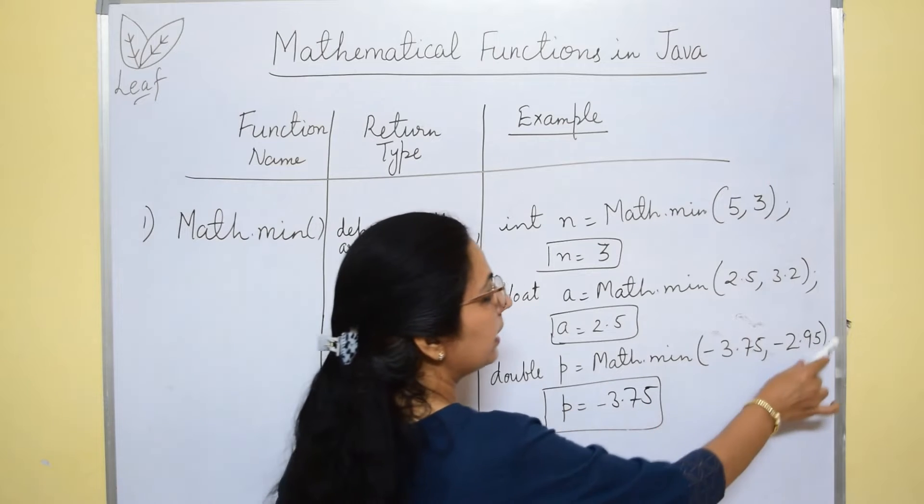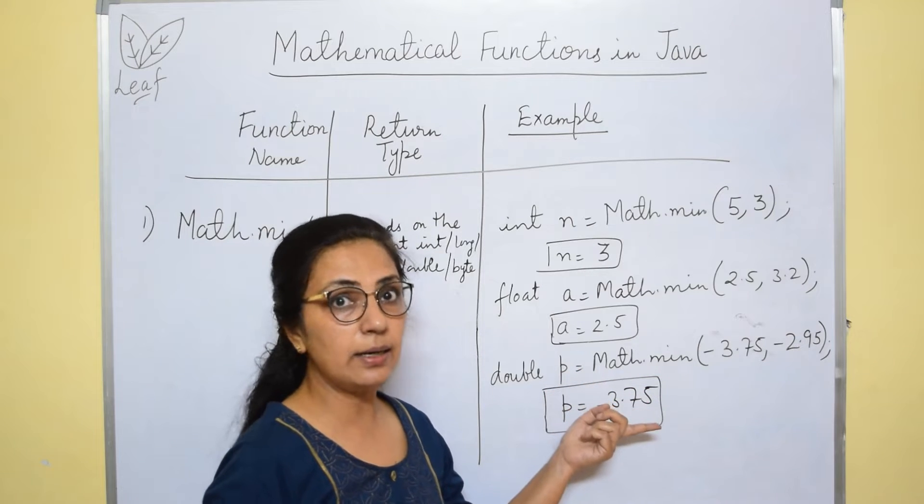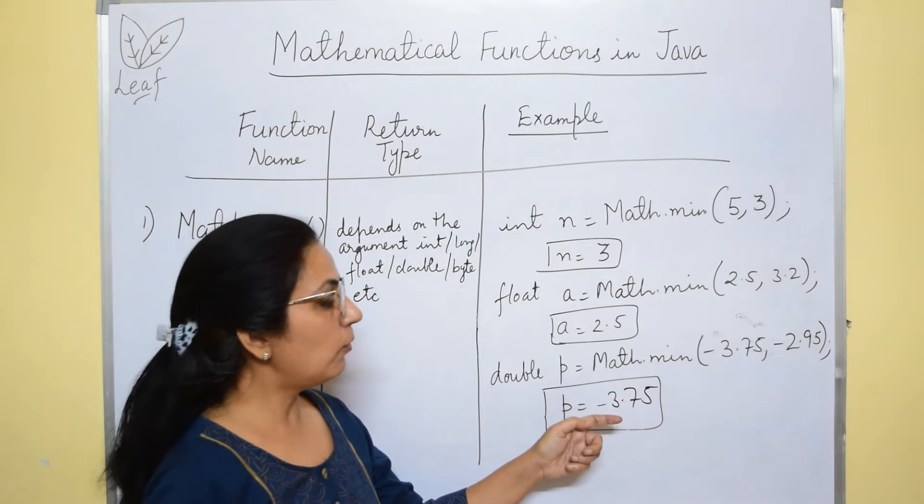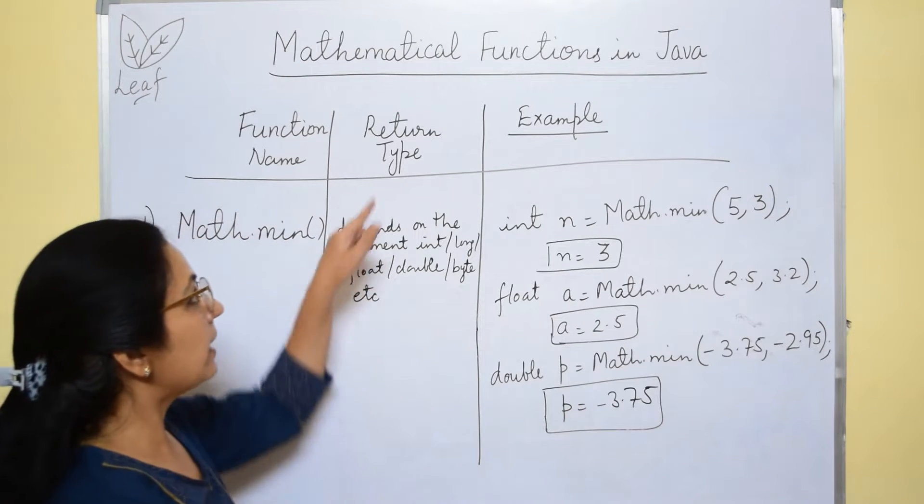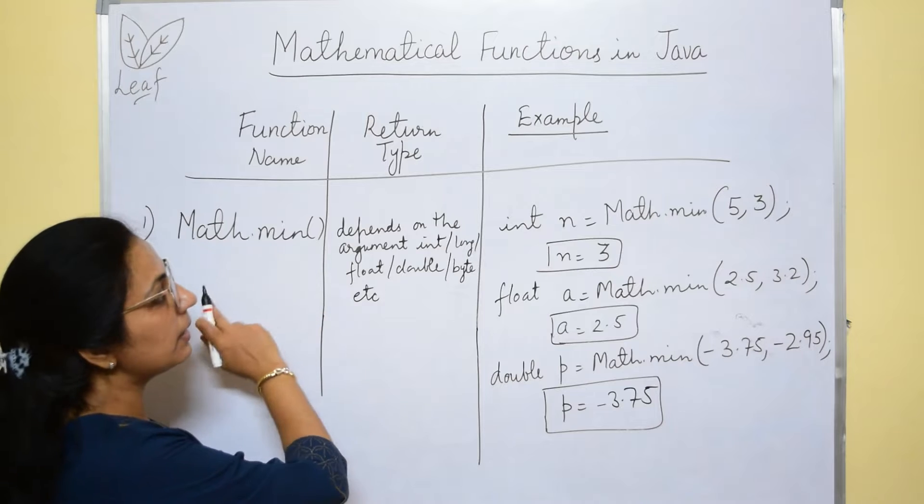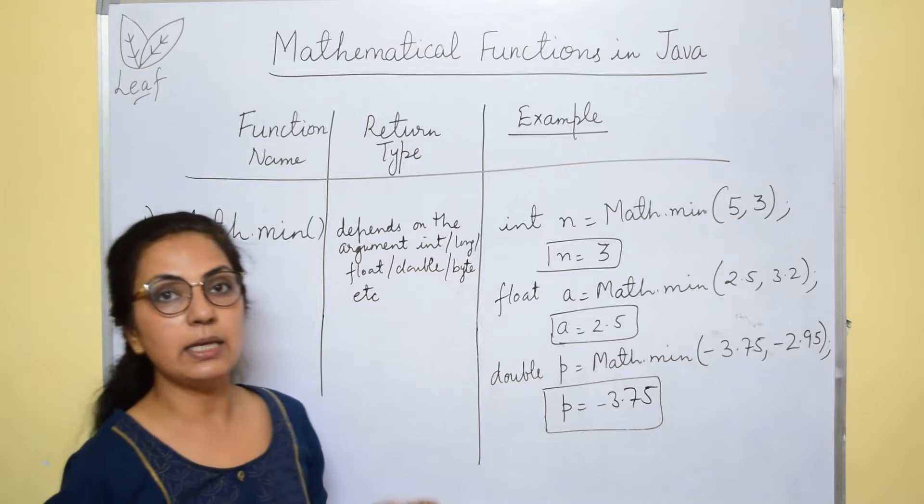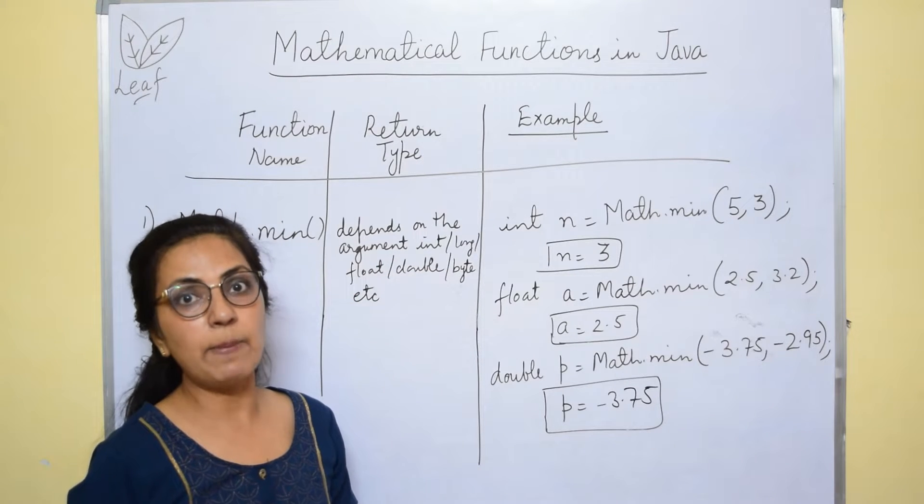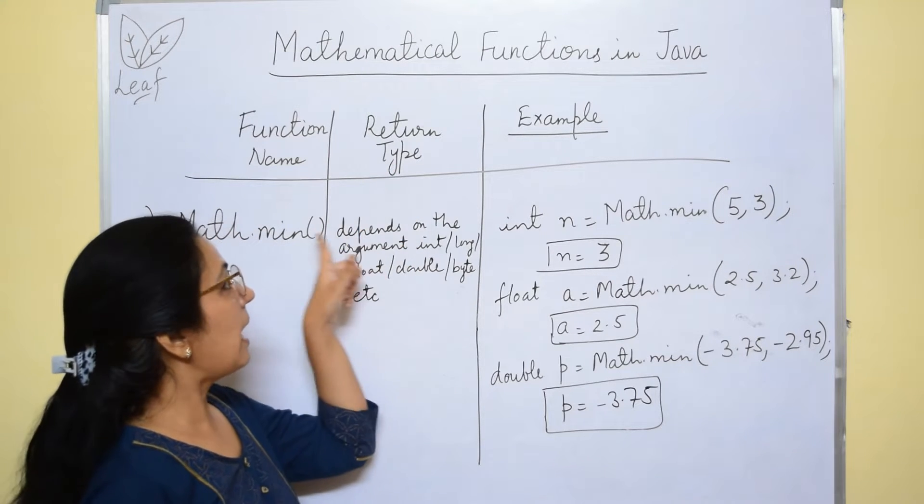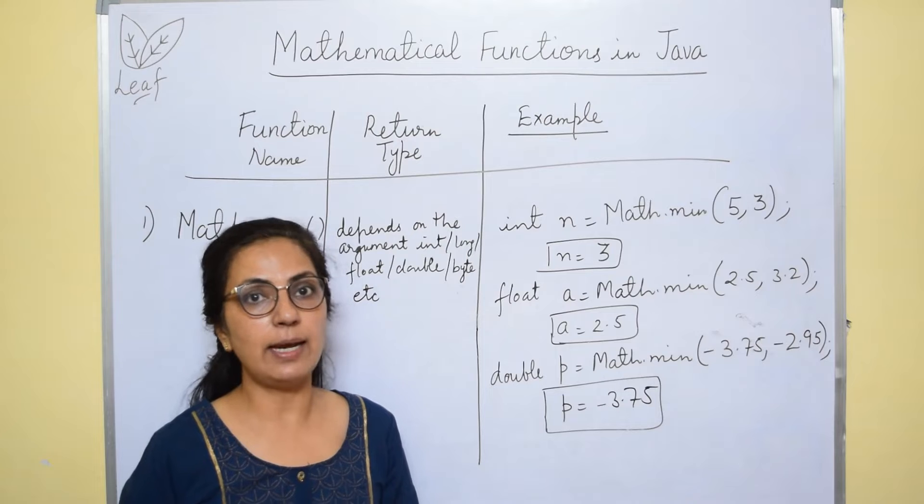Each function returns one result depending upon what is executed, what is written in its body according to that one value the function returns. Which type of value the function will return? That is known as the return type of the function. And math.min function, the return type of this function depends upon the argument type. If we are giving integers, it will return int. If we are passing double value, it will return double, float then float. The return type of min function depends upon the argument which we are giving to the function while executing.